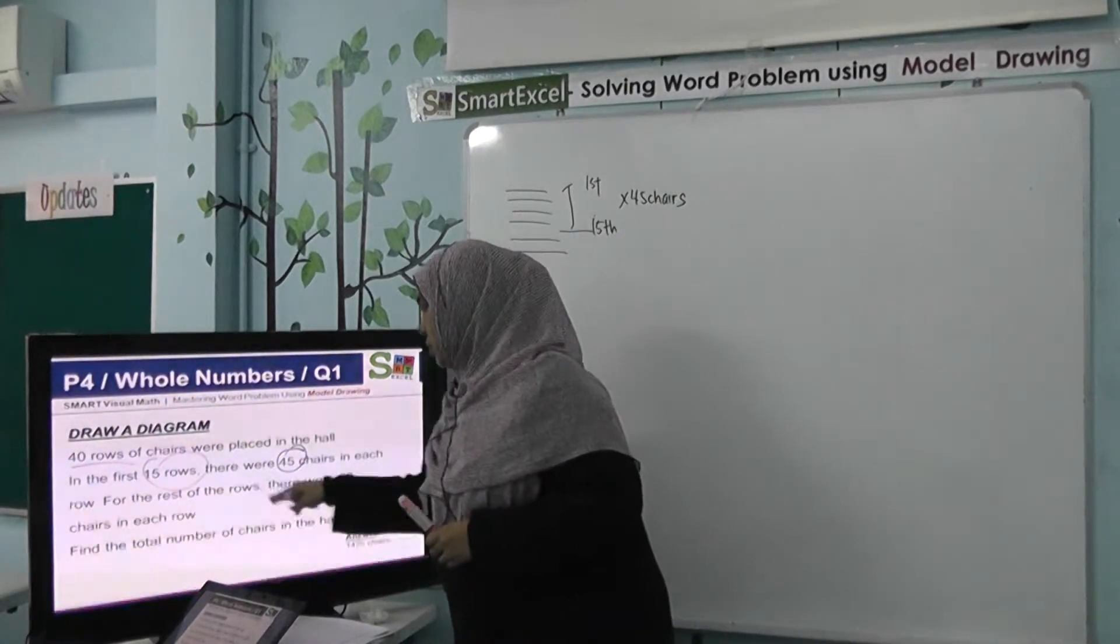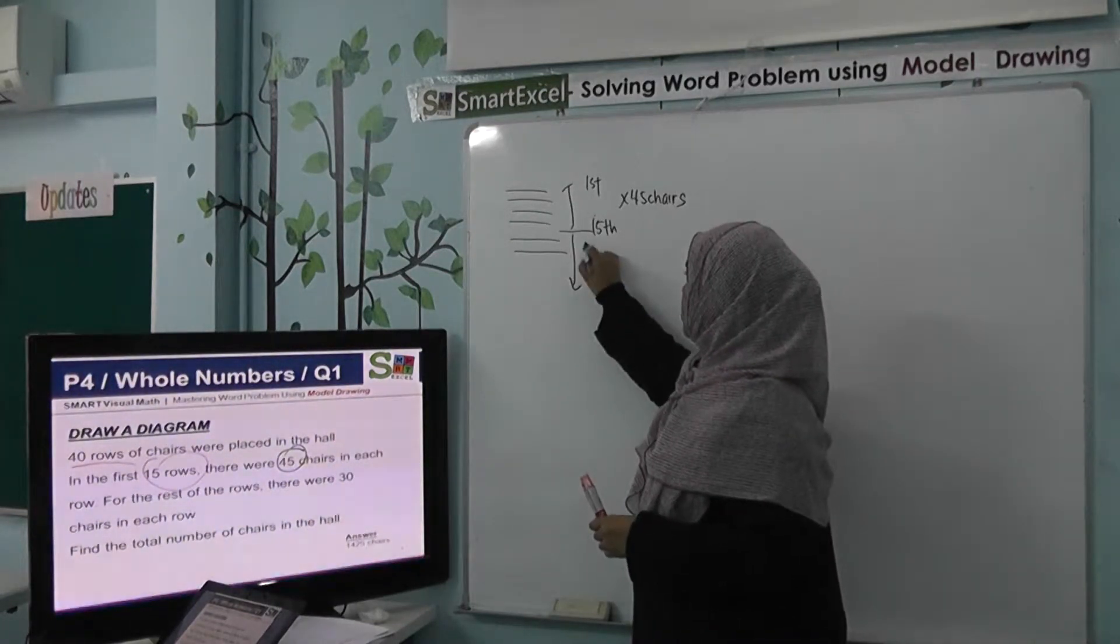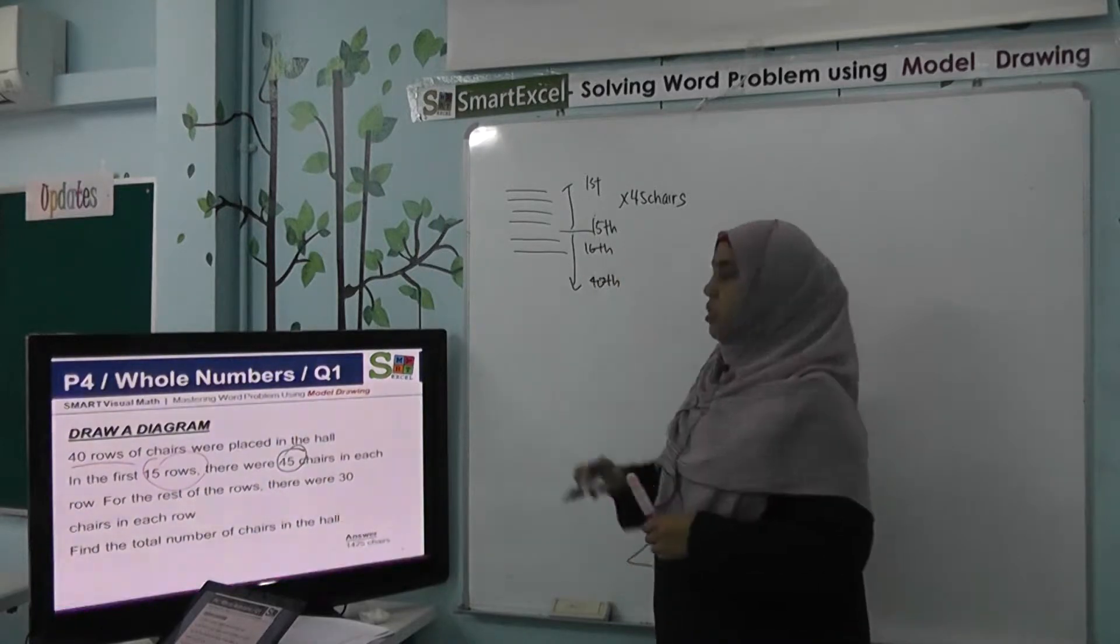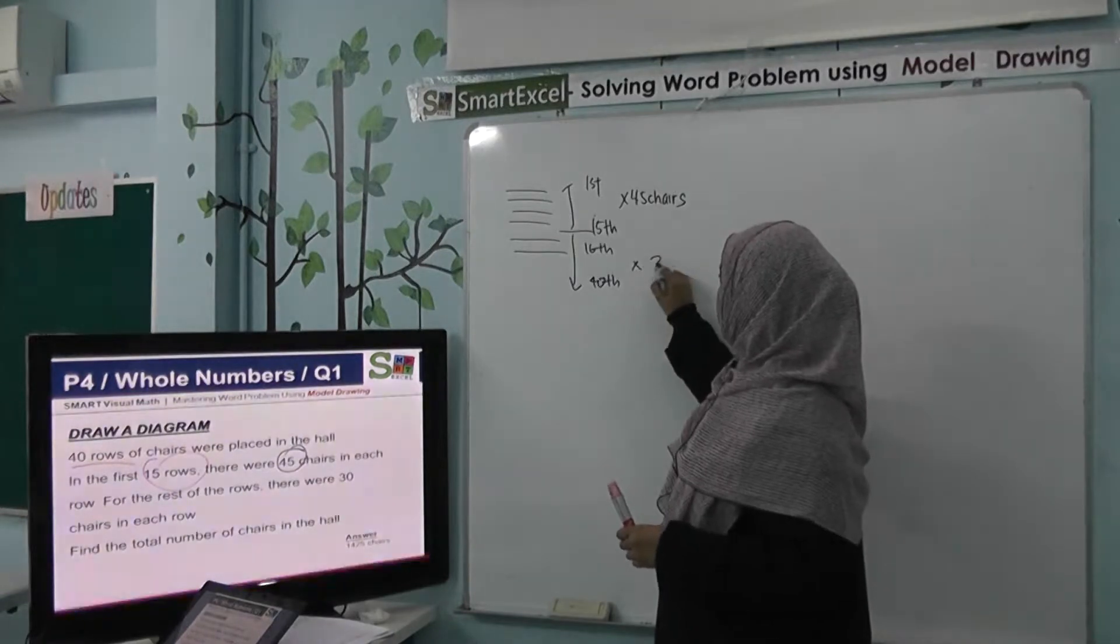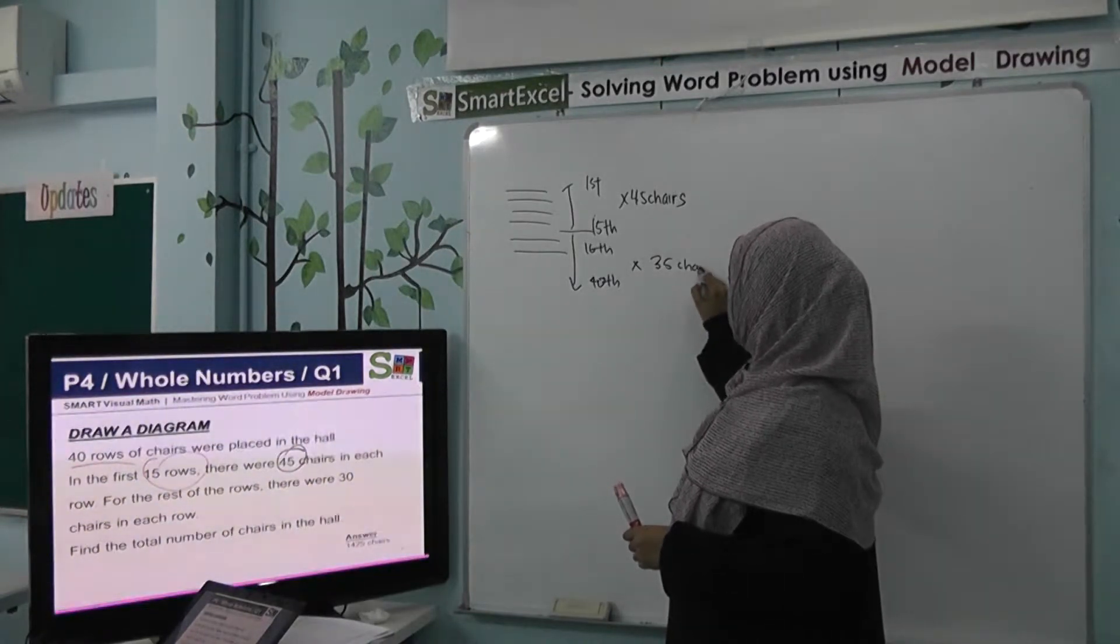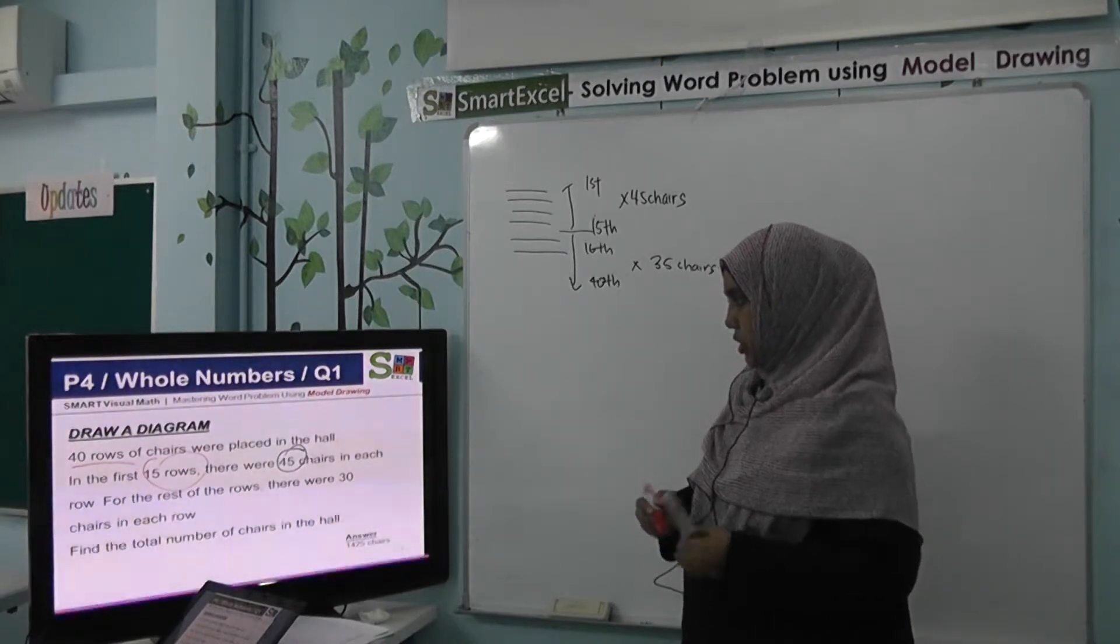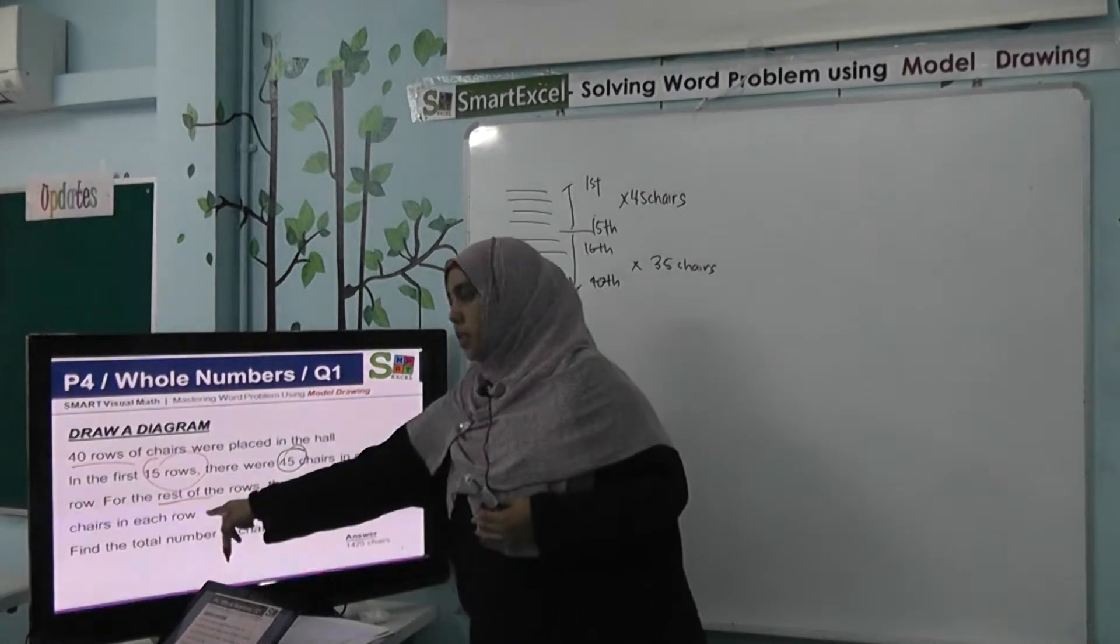Then, the next is the rest of the row. The rest of the row referring to this one, which is 16 all the way to your 40. To your 40, then below this we have 30 chairs per row. For the rest of the row, they have 30 chairs in each row.